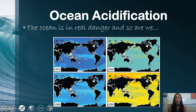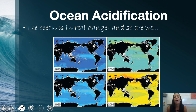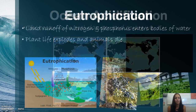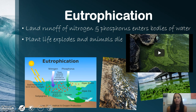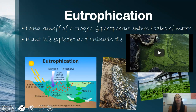Ocean acidification projections show by 2095 large portions of the ocean indicated in yellow, orange, and red are expected to show significant acidification. Another concept is eutrophication — this is land runoff, typically from excess fertilizer from farming and animal waste, causing nitrogen and phosphorus to enter bodies of water. As a result, algae explodes and all the animals die.